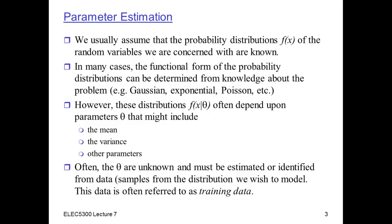In many cases, the assumption that we know the functional form of the probability distribution is a reasonable one. For example, we might know that the random variable is the sum of a bunch of small, independent effects, and the central limit theorem would tell us that a Gaussian distribution would be appropriate. However, we might not know the mean and the variance of that Gaussian distribution. So what we would like to do is estimate these from data — given the data, what is a good estimate of these unknown parameters, the mean and the variance?